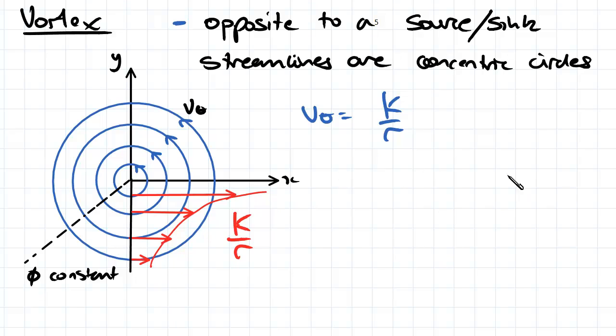So essentially the equations are derived in the same way. We're using the polar coordinate system and we're integrating in terms of R and theta when necessary to come up with our streamline equation and our velocity potential equation.